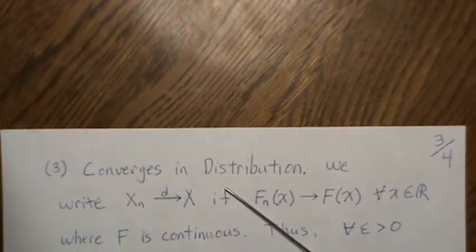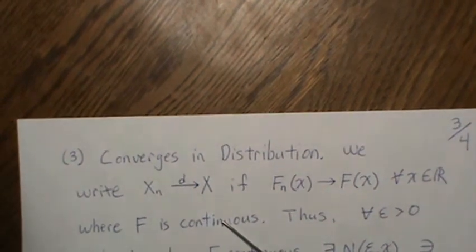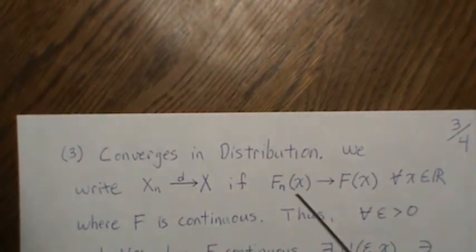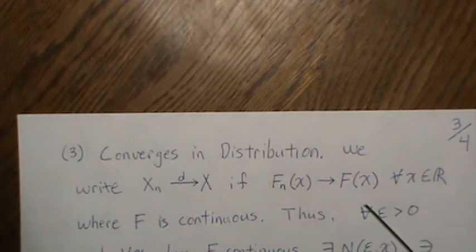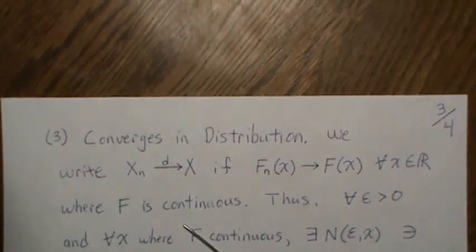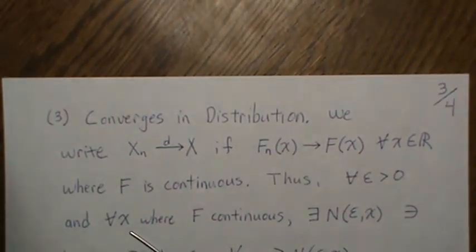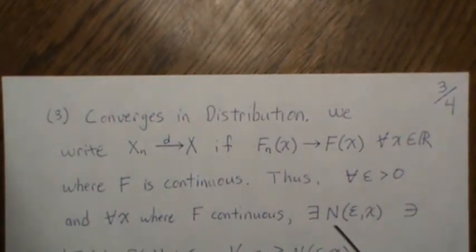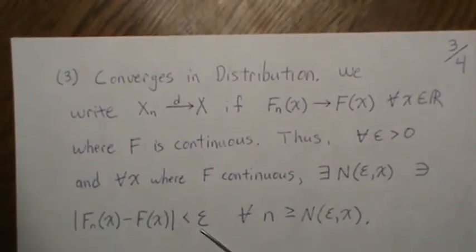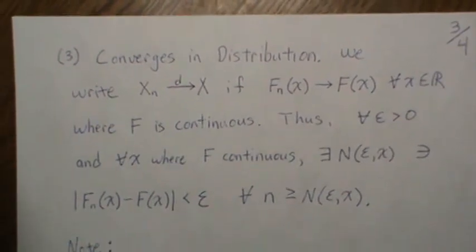The third type is convergence in distribution. We write X_n →ᵈ X, where the little D means convergence in distribution. This means the CDF F_n(x) of X_n converges to the CDF F(x) of X, for all x where F is continuous. Formally, for every ε > 0 and for all x where F is continuous, there exists an N (a function of ε and x) such that |F_n(x) - F(x)| < ε for all n > N.